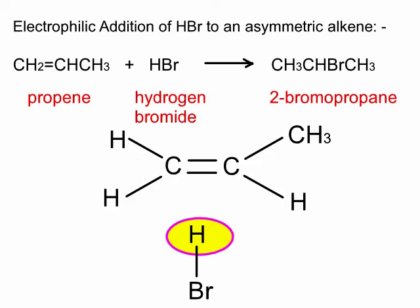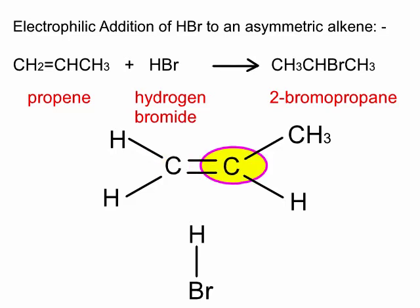So here's the question: where is the H of the HBr going to go? Is it going to go on to the left-hand carbon? Because if it does, the bromine will go on the right-hand carbon and form 2-bromopropane. Whereas if the H of the HBr goes on the right-hand carbon, the bromine will go on the left-hand carbon and we'll get 1-bromopropane.